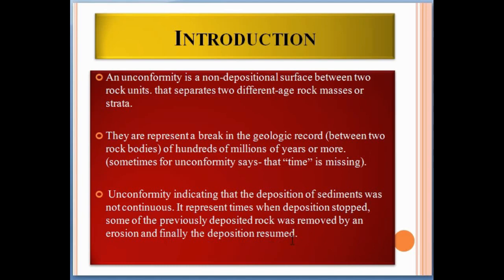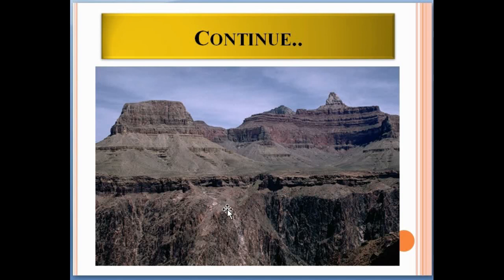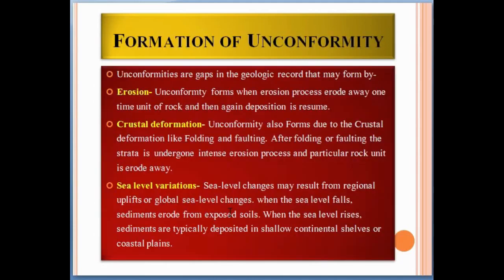Unconformity represents times when deposition stopped, some previously deposited rock was removed by erosion, and finally deposition resumed. Here we can see an unconformity between sedimentary rock units and metamorphic rock units. This horizon was eroded away, and this horizon shows the unconformity between the two rock units of different ages.